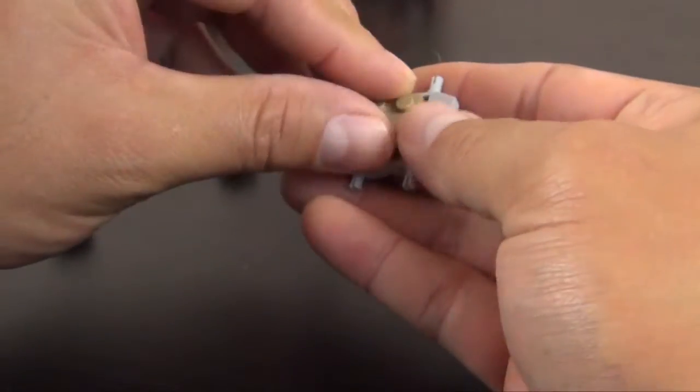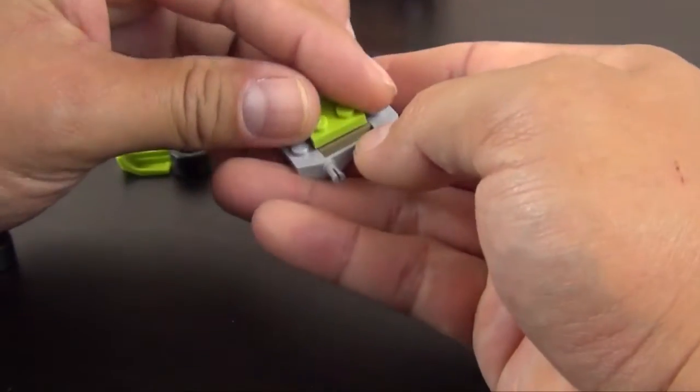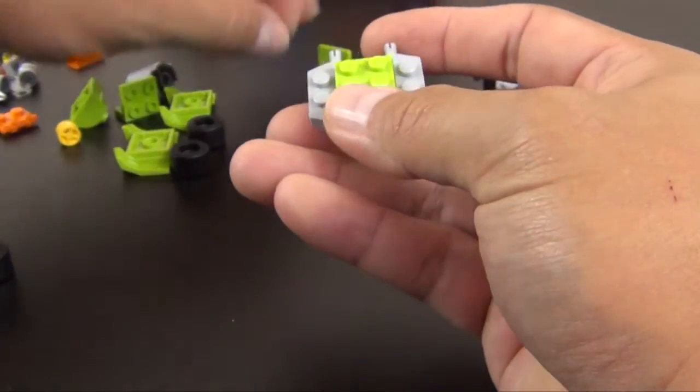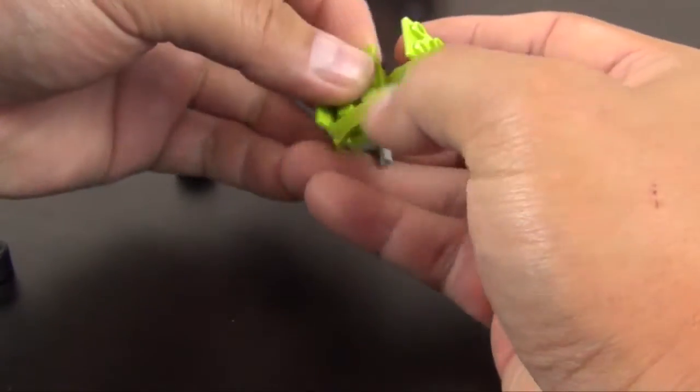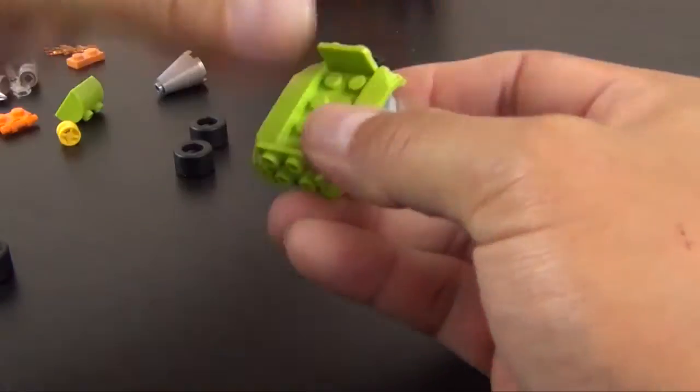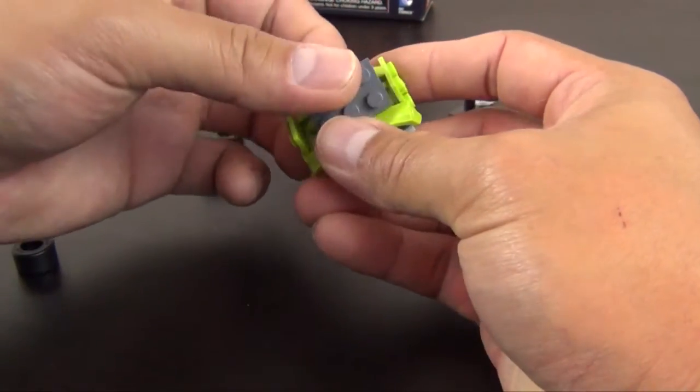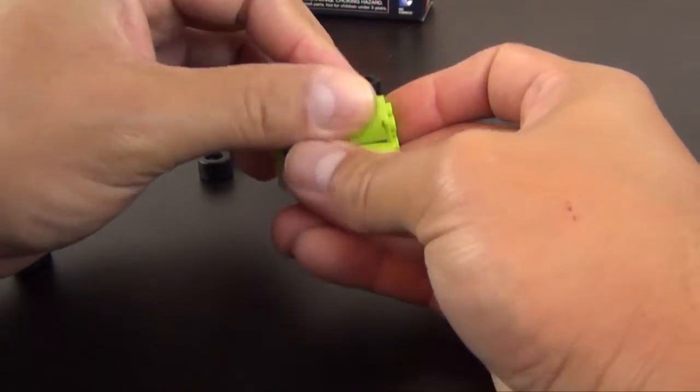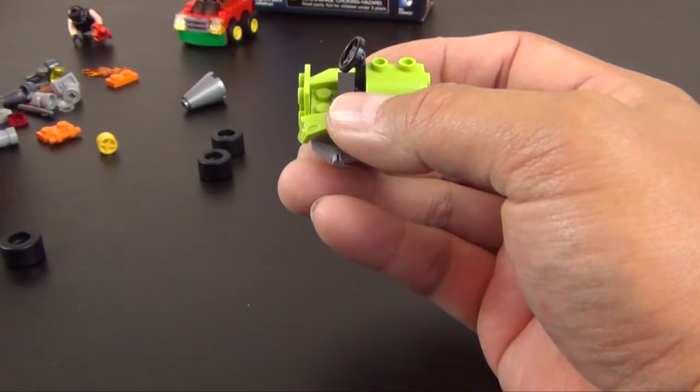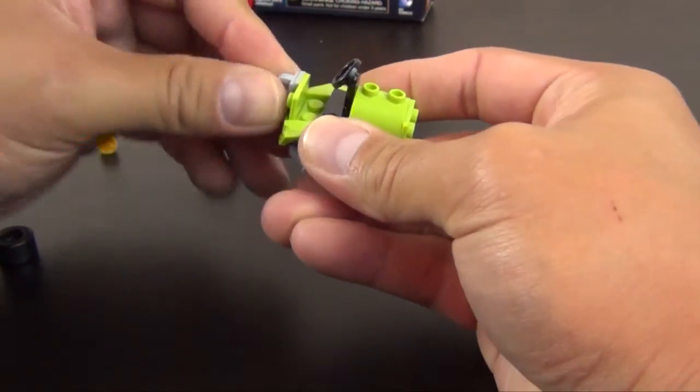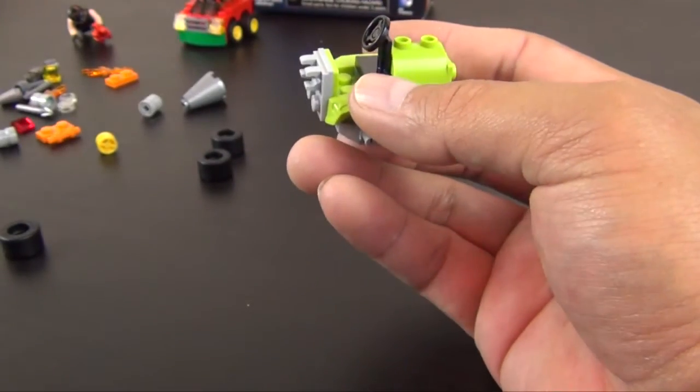Begin with the same little chassis piece that we used for Robin's car, but that's kind of where the similarities end because we're going to build it up slightly different. Quite a bit of lime green to form his vehicle. You can already tell that it's more of a sturdy build, nothing's falling apart as I'm putting it together.